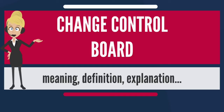Decisions regarding whether or not proposed changes to a software project should be implemented. In short, any changes to the baseline requirements agreed with the client should be taken up by the project team on approval from this committee. If any change is agreed by the committee, it is communicated to the project team and client, and the requirement is baselined with the change.